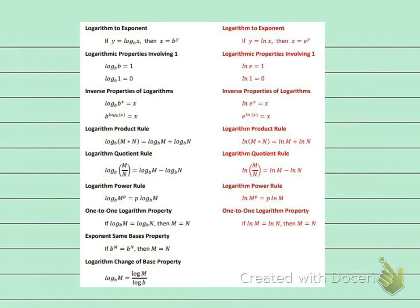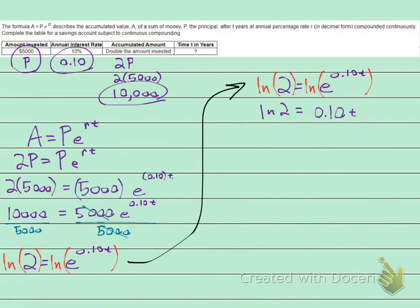We're using this property: natural log of E to the X is just X. Now I see my T. I want to get it all by itself. The only way to get the T by itself is to get rid of the 0.10, which is multiplied. To get rid of multiplication, I'm going to divide. Divide by 0.10 on both sides. These reduce down to 1. So I have T all by itself, and it equals the natural log of 2 over 0.10.